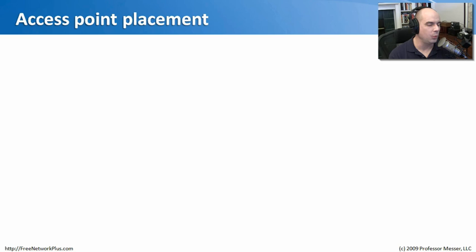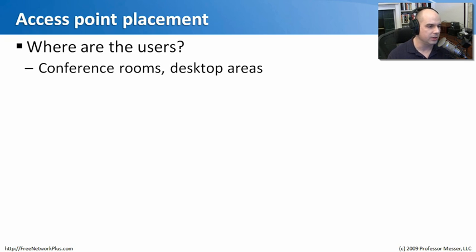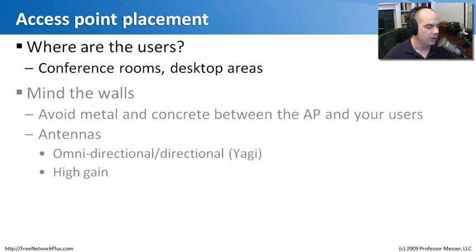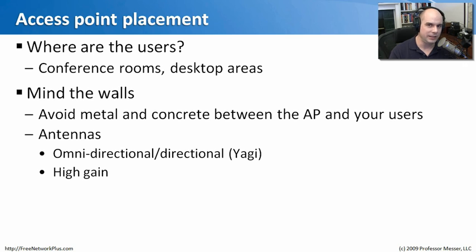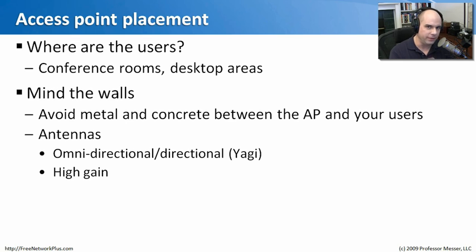With client workstations ready, let's talk about where we're going to put the access point. Placement becomes pretty important — we need to know where users will access the wireless network, whether at a desk or in a conference room. We want to avoid obstacles like concrete walls or metal, which can attenuate the signal significantly. Stay away from walls, and make sure the access point faces toward where users are. You can also use specialized antennas — high-gain, omnidirectional, or directional Yagi antennas — to point directly to another location.